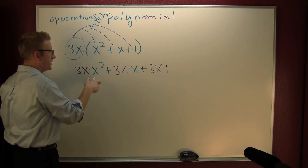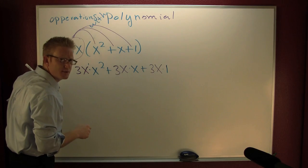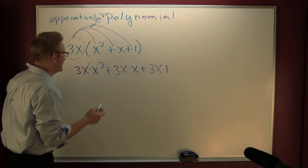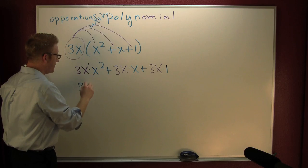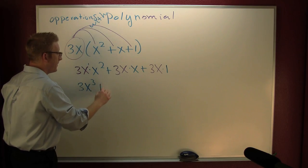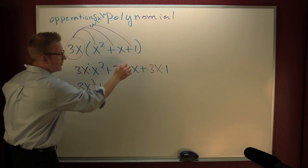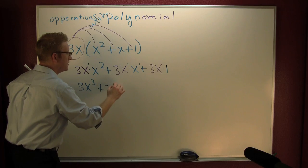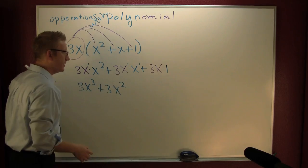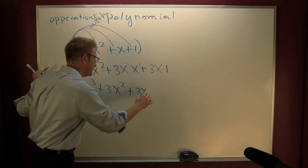You have the same base and you're multiplying - what are you gonna do to their exponents? Add them. 1 and 2 make 3, so 3x³. Plus 3 times 1 is 3x², and then I'm gonna add 3x to it.